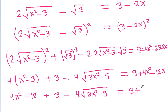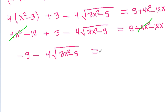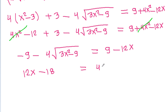Continuing the simplification: 4x squared minus 12 plus 3 minus 4 square root of (3x squared minus 9) is equal to 9 plus 4x squared minus 12x. And it is 2x, and minus 9 minus 9 will be minus 18, equal to 4 square root of (3x squared minus 9).